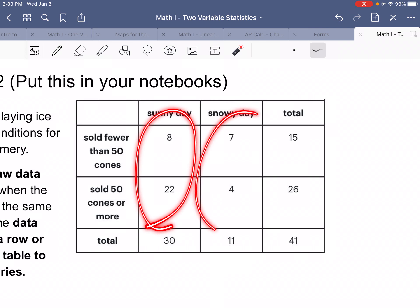Now looking at this though, on a sunny day, you're much more likely to sell 50 cones or more. On a snowy day, you're more likely to sell less than 50 cones. That right there shows us a significant difference. We don't even have to find a percentage to see that.